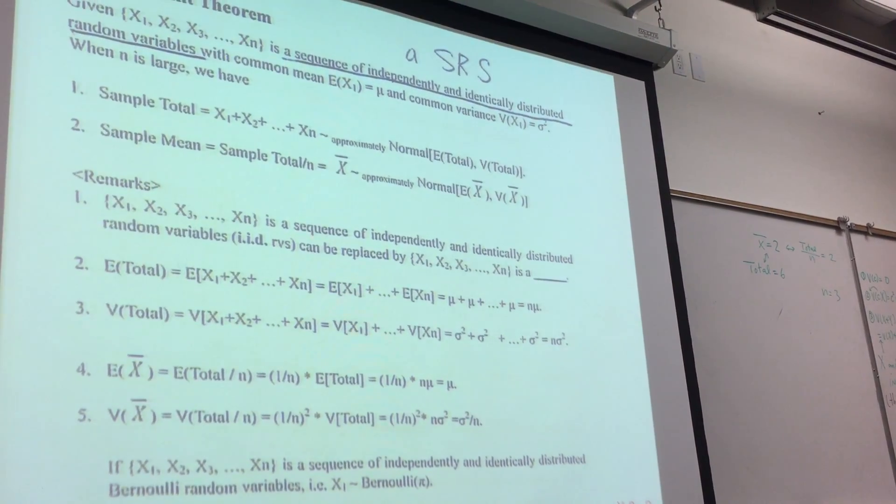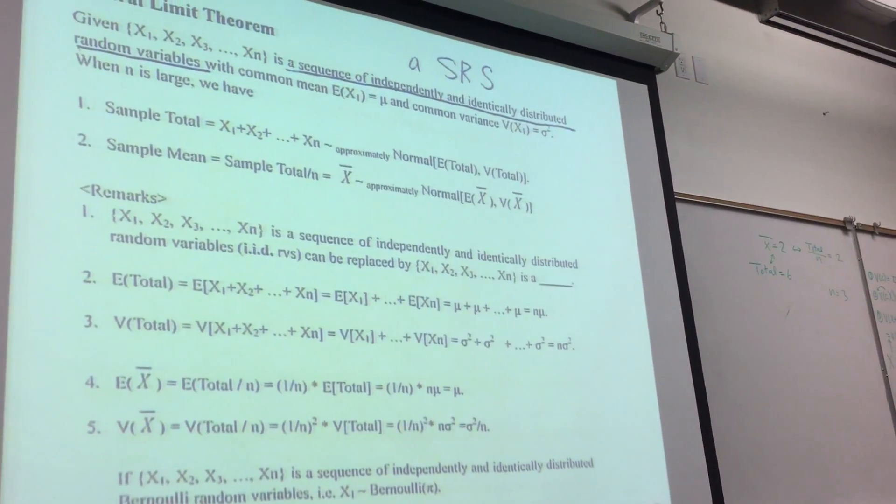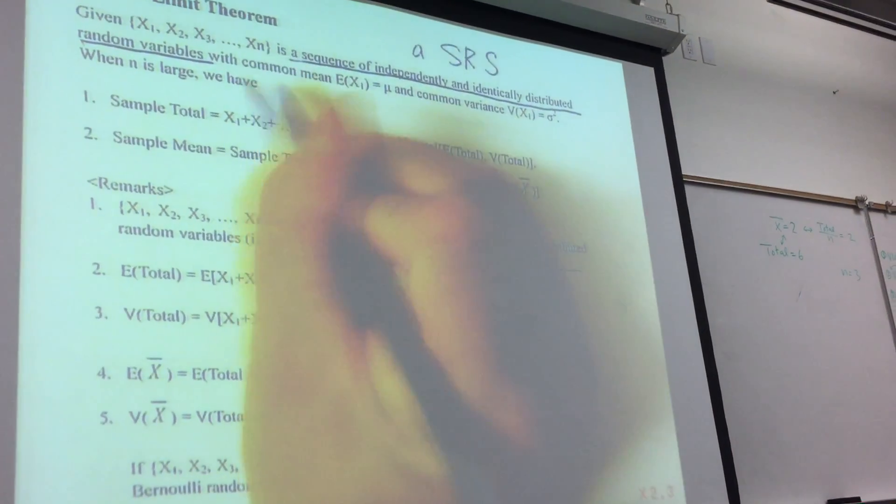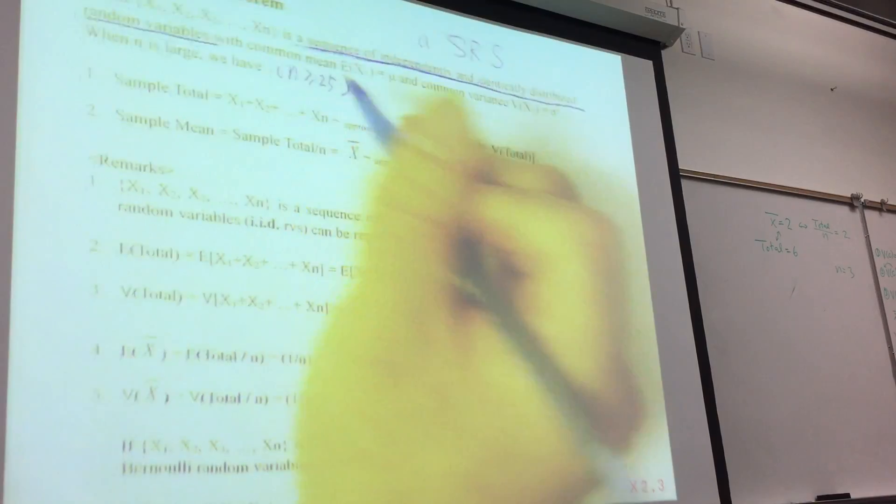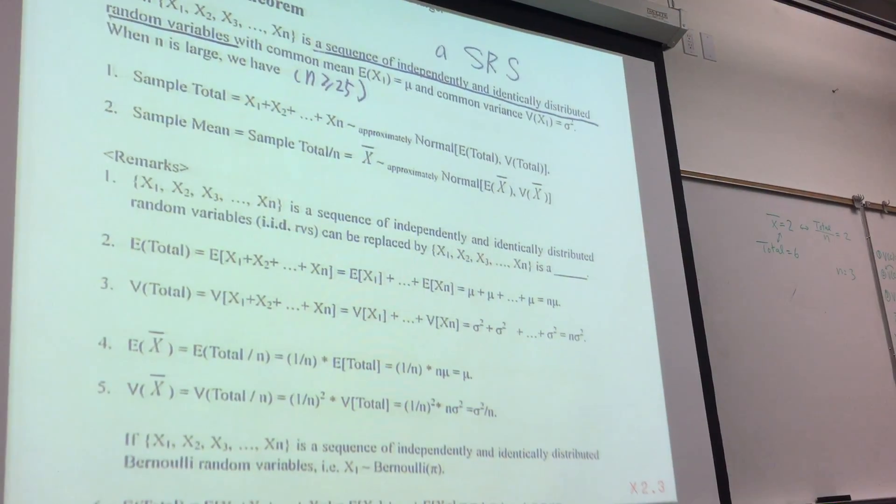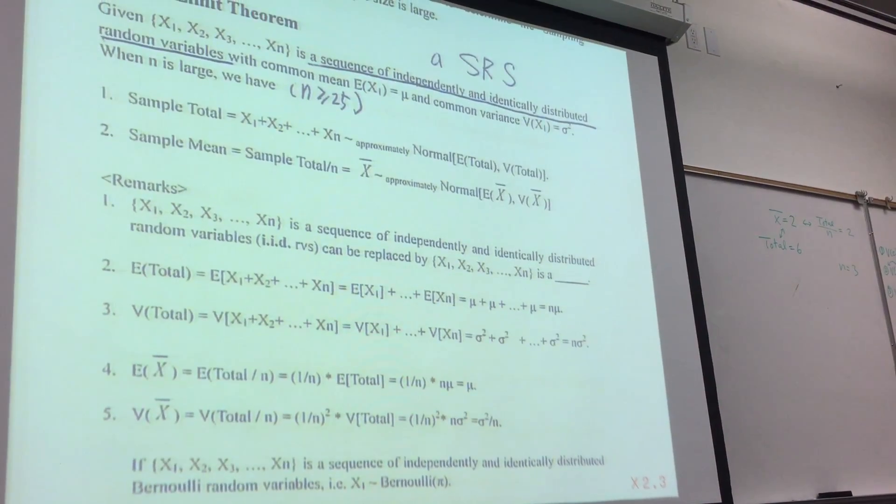So let me write this down. How large is considered large? In our version, we say n ≥ 25. So let's stop here. Thank you.